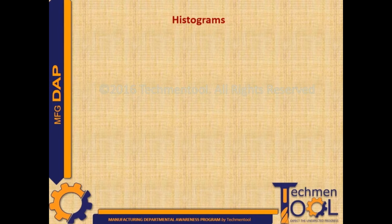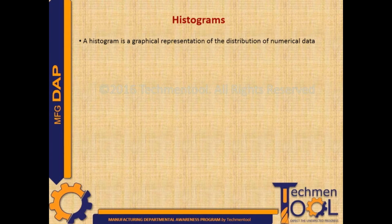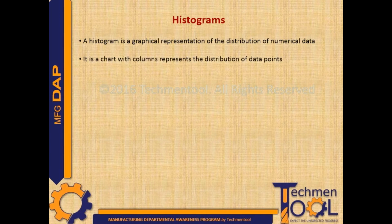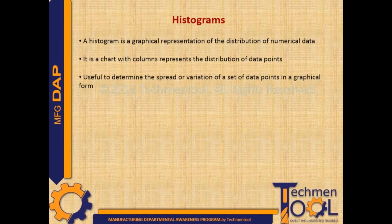Histograms – a histogram is a graphical representation of the distribution of numerical data. It is a chart with columns that represent the distribution of data points, useful to determine the spread or variation of a set of data points in a graphical form.